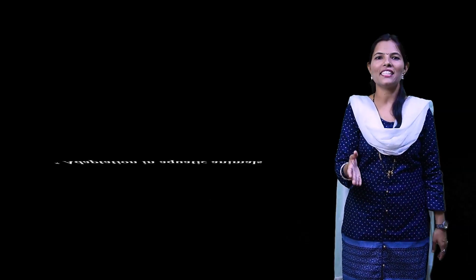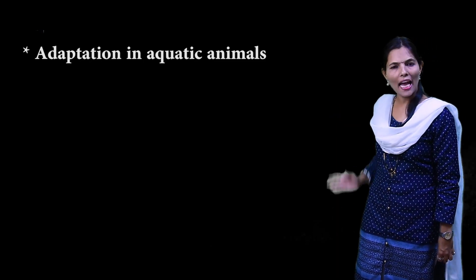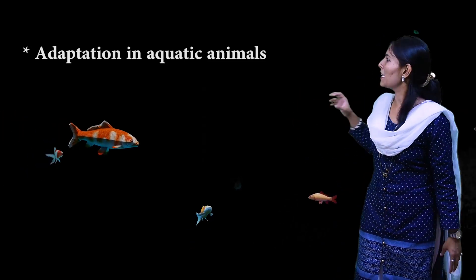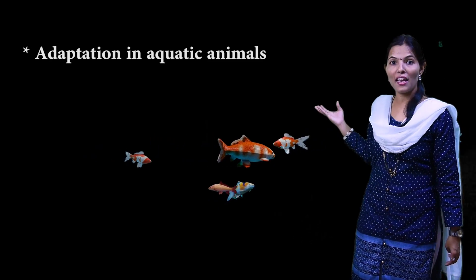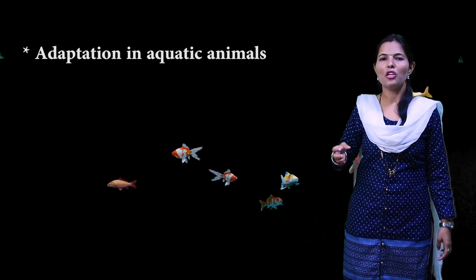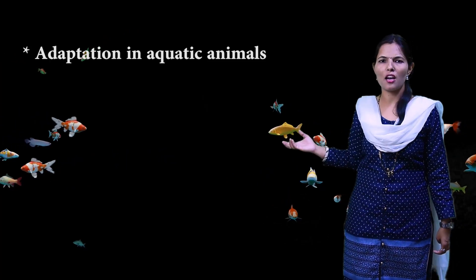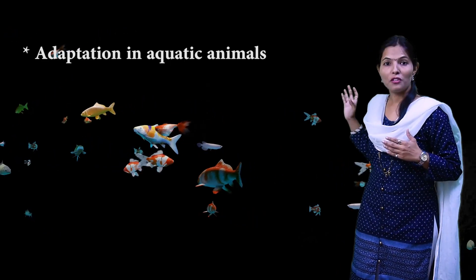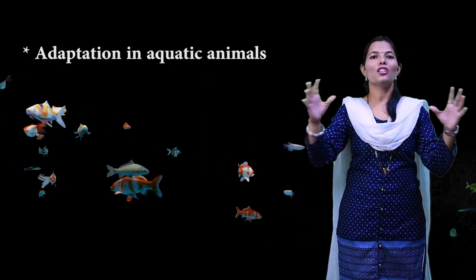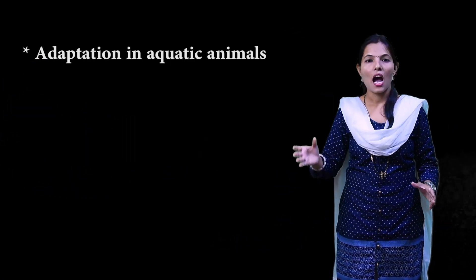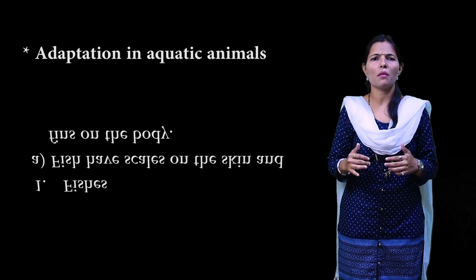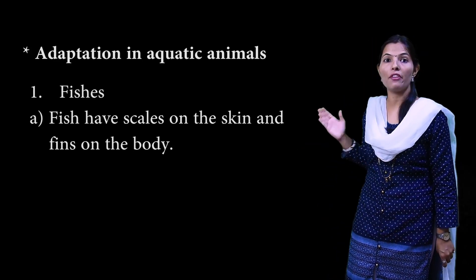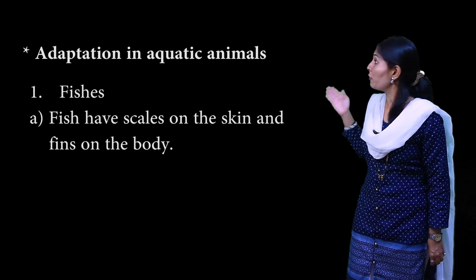So let's see Adaptation in Aquatic Animals. You can see how beautiful aquatic animals are. For the first adaptation in fishes: they have scaling — the scales on their skin — and fins on the body.